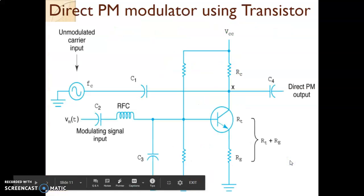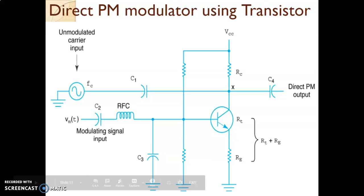This is the circuit diagram of a direct phase modulator using a transistor, and this particular circuit is nothing but a simple class A power amplifier with two inputs. One is the modulating signal and another is the carrier signal, because for any modulator circuit we require two inputs: one is the carrier and another is the modulating signal. Let us locate where the carrier is and where the modulating signal is.